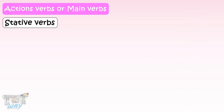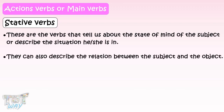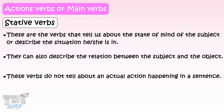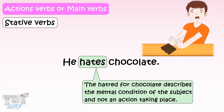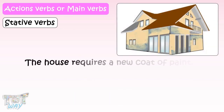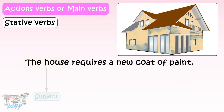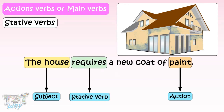Now let's learn about stative verbs. These are verbs that tell us about a state of mind of the subject or describe the situation he or she is in. They can also describe the relation between the subject and the object. These verbs do not tell about an actual action happening. For example, 'He hates chocolate.' The hatred for chocolate describes the mental condition of the subject, not an action. So, 'hates' is a stative verb. Another example: 'The house requires a new coat of paint.' The stative verb 'requires' describes the relationship between the subject, the house, and the object, paint.